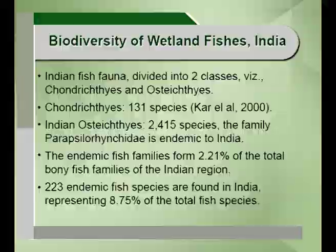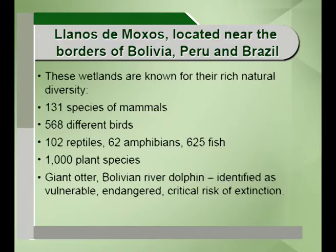Another case study is the Llanos de Moxos, located near the borders of Bolivia, Peru and Brazil. It is known for its rich natural diversity as one of the largest wetlands, with 131 species of mammals, 1,000 plant species, 625 species of fishes and more than 500 species of different birds. The Bolivian river dolphin and the giant otter are considered to be at critical risk of extinction.